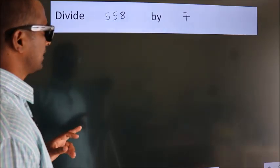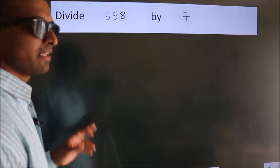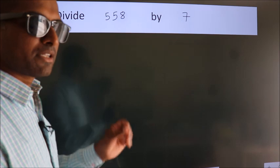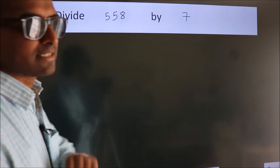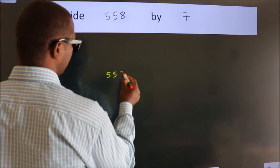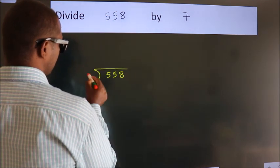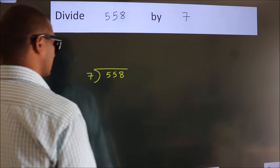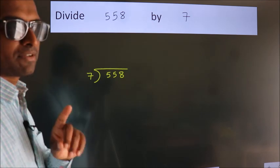Divide 558 by 7. To do this division we should frame it in this way. 558 here, 7 here. This is your step 1.